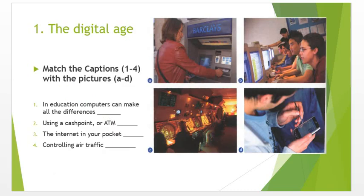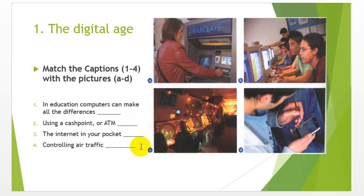In this slide, we will see the title 'The Digital Age.' Match the captions 1 up to 4 with the pictures A to D. Here we have 1, 2, 3, 4 and here we have some blanks. You can write A here, D here, and C after that like this. Look at the pictures and read these sentences and find which picture matches with these captions.